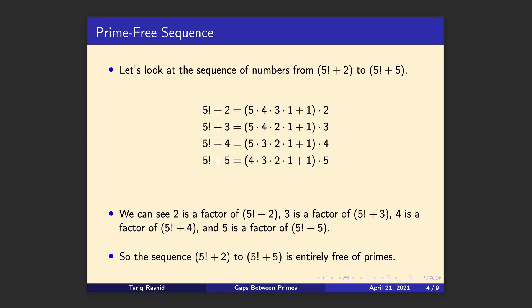So let's look at an interesting sequence that we can build from factorials. We'll look at an example now and kind of generalise from it. So the pattern is that we look at a sequence of numbers starting from 5 factorial plus 2 all the way up to 5 factorial plus 5. So it's 5 factorial plus 2, 5 factorial plus 3, 5 factorial plus 4, 5 factorial plus 5. So it's 4 numbers really in this small sequence.